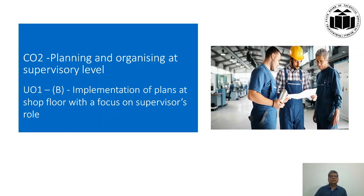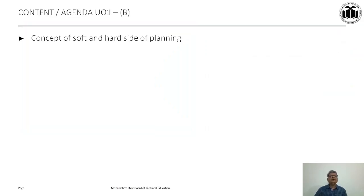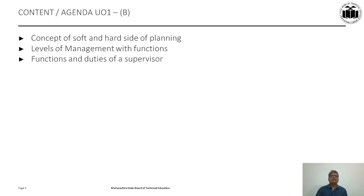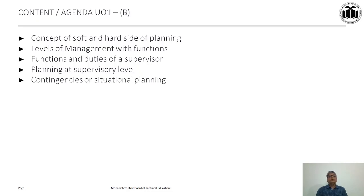In part a we discussed the nature of planning, characteristics of planning, its importance, and how plans are made. Now in this part we will see how plans are to be executed. The agenda covers: the concept of soft and hard side of planning, levels of management with functions, functions and duties of a supervisor, planning at supervisory level, contingency or situational planning, and a summary of parts a and b.